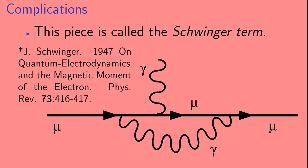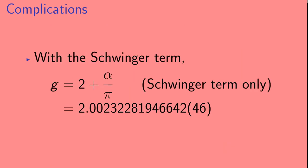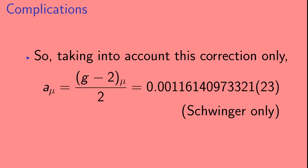This piece is called the Schwinger term. The Schwinger term takes G from 2 to 2 plus alpha over pi, where alpha is something called the fine structure constant. Now, alpha is usually written in terms of its inverse, which is about 137. But, it's actually extremely well measured. So, here we give the value of alpha, and you can see that its error bar is in the last two digits quoted. So, now, with the Schwinger term, G takes on a value that is slightly more than 2. And, this means that A mu, the anomalous magnetic moment of the muon, which is just G minus 2 of the muon over 2, takes on a value that is non-zero.